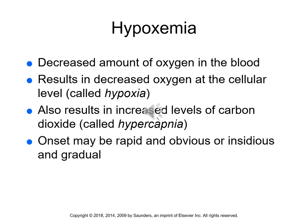Hypoxemia is decreased oxygen in the blood. If not corrected, it will eventually lead to decreased oxygen at the cellular level, which is called hypoxia. Hypoxia in turn will result in an increase in carbon dioxide levels, which is called hypercapnia. Remember: 'hyper' in front of a word means excessive or more than, and 'hypo' in front of a word means less than.